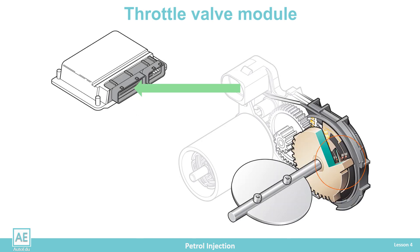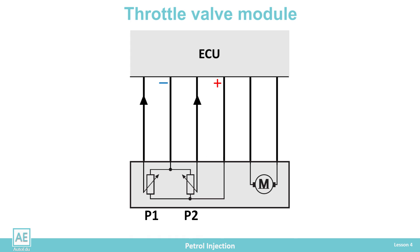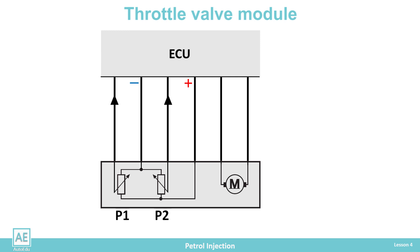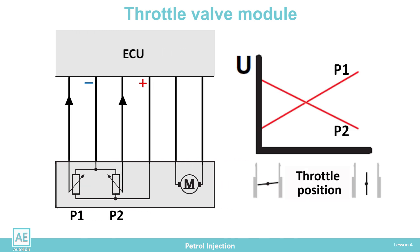The sensors are potentiometers that measure the angular position of the throttle. The sliders of the potentiometers are on the butterfly shaft and follow its rotation. Potentiometers have a common power supply of 5V from the ECU, but it is cross-connected so that on the same terminal one gets a plus and the other a minus power supply. The result of such a connected power supply is an opposite output voltage characteristic that allows the ECU to distinguish the sensors. Thus, when the throttle rotates, the voltage output signal of one sensor increases while the other decreases and vice versa.